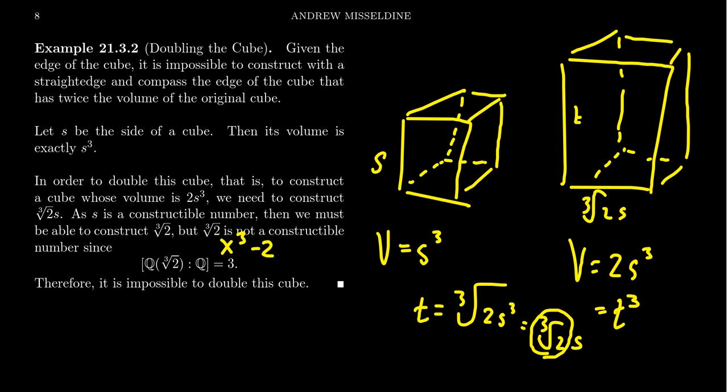But we proved previously that for the field of constructible numbers, if you take a constructible number and adjoin it to Q, then the degree of the extension is always a power of 2, for which 3 is not a power of 2. This tells you that the cube root of 2 is not constructible, and therefore we cannot double the cube.